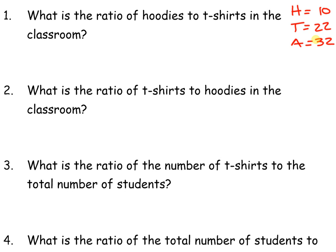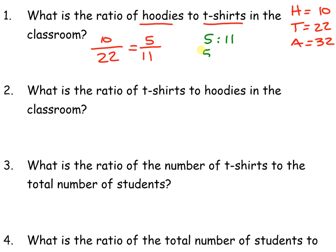With that data, we're going to write some ratios. What is the ratio of hoodies to t-shirts in the classroom? I have 10 over 22 as a fraction — is that as simplified as possible? No. Simplify it and you get five over 11. Let's write it all three ways: five colon 11, five to 11, or five slash 11.